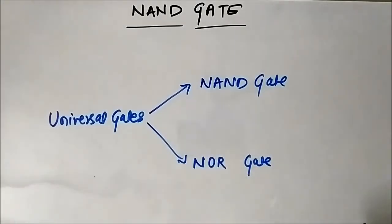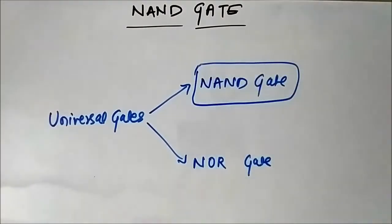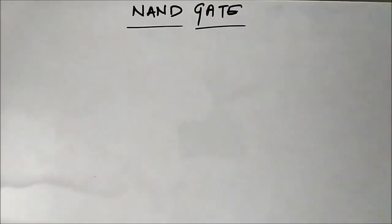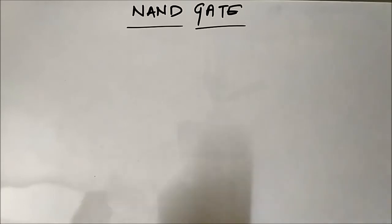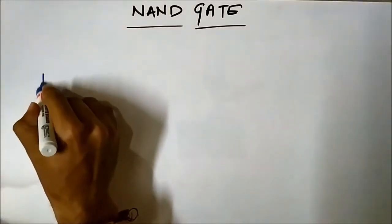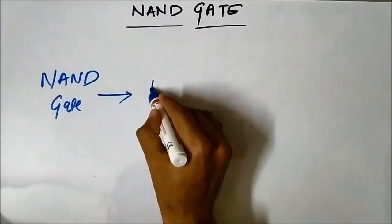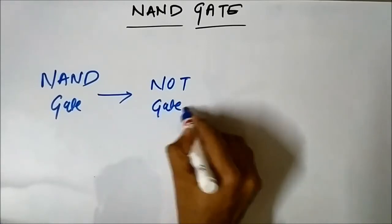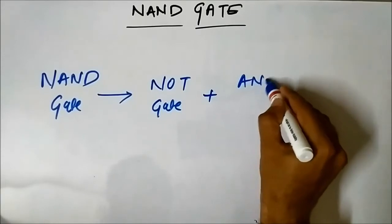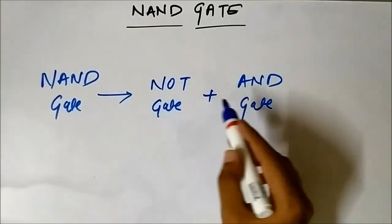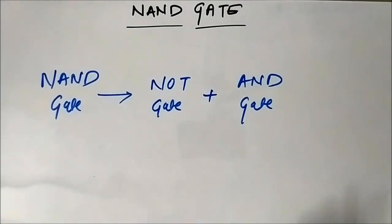We will discuss the NOR gate in a separate video. In this video we are going to discuss the NAND gate. The NAND gate is actually a combination of the inverter and the AND gate. When you combine the inverter or the NOT gate with the AND gate, you get the NAND gate.